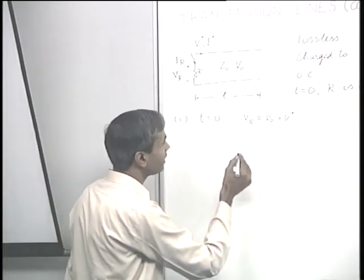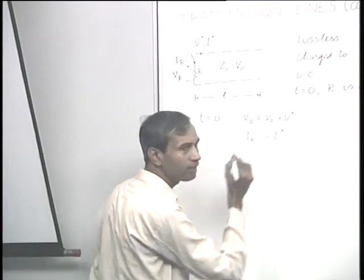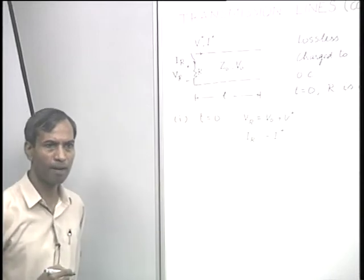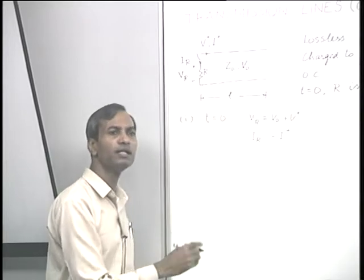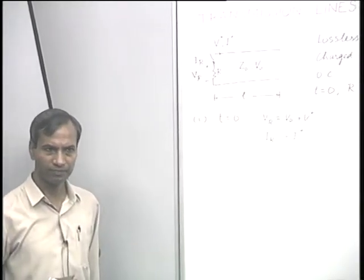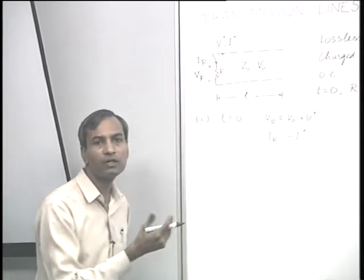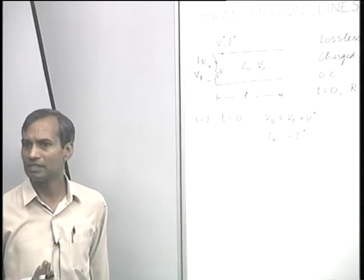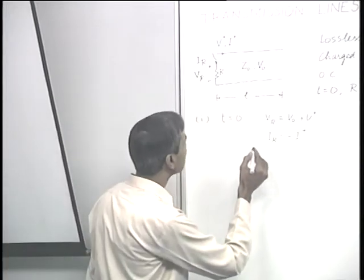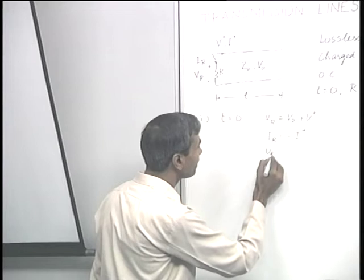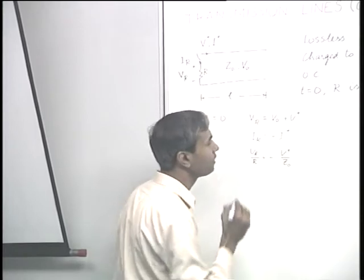What will be the relation between I R and I plus? As per the directions shown, I R will be minus I plus. I R and I plus are not independent of V R and V plus — they are related through the resistance and the characteristic impedance. Therefore, we can write I R equals V R by R, which should equal minus V plus by Z naught.